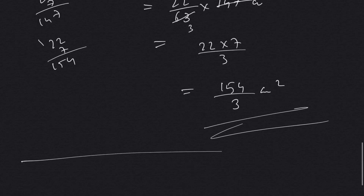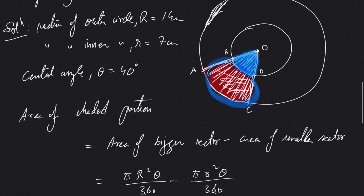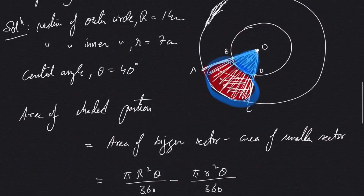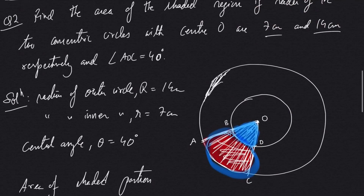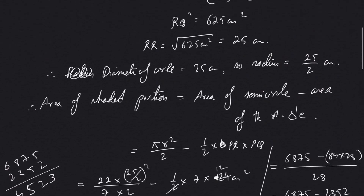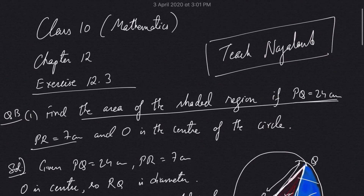To find out the area of the shaded portion, we don't need many new concepts — we just require knowledge from previous topics such as areas of circles, sectors, segments, right triangles, and so on. In the next video, we will do some more questions from this exercise. Thank you.